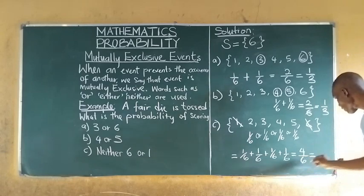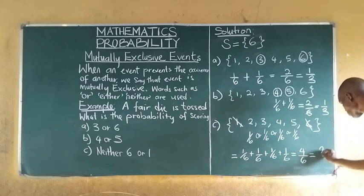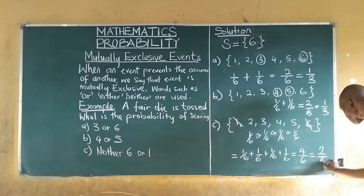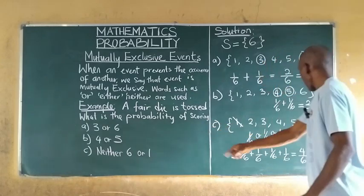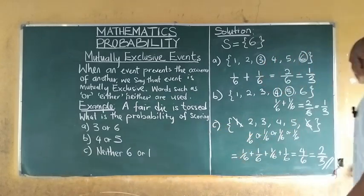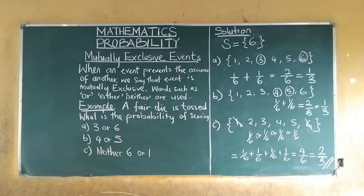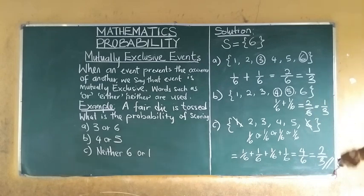So the probability of scoring neither six nor one is four over six, which simplifies to two over three. For more on mutually exclusive events, you can subscribe to this channel.